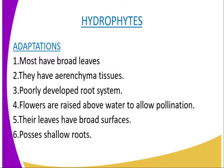The adaptations of mesophytes to their habitats include: first, most have broad leaves, which are able to lose water to the environment because they are situated in places where there is a lot of water. Second, they have aerenchyma tissues which can also be used for breathing. Third, they have a poorly developed root system, because they do not need to be deep-rooted since water is found close to the surface. Fourth, the flowers are raised above water to allow pollination. Fifth, their leaves have broad surfaces to allow extensive transpiration through the cuticles, stomata, or other transpiration methods.